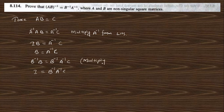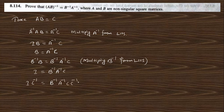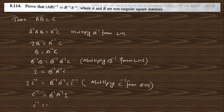Multiplying C inverse from the right-hand side: C times C inverse gives I, so C inverse equals B inverse A inverse. Since C is AB, you can write (AB)⁻¹ equals B⁻¹A⁻¹. This is the proof and the answer of this question.